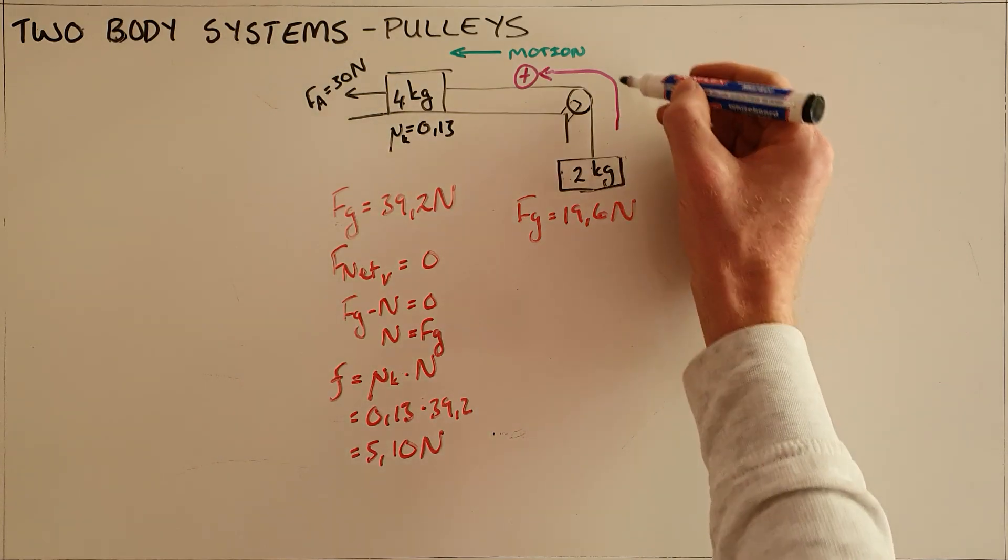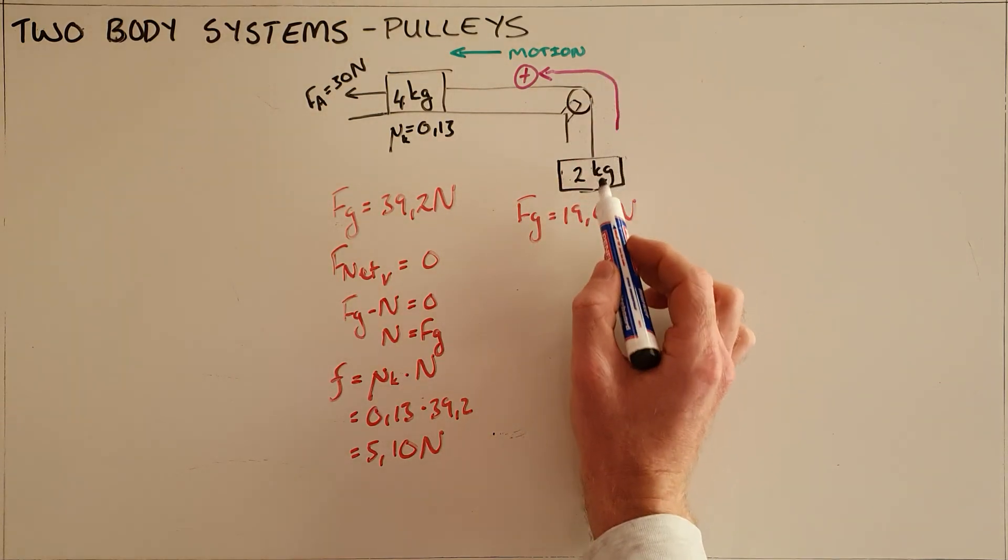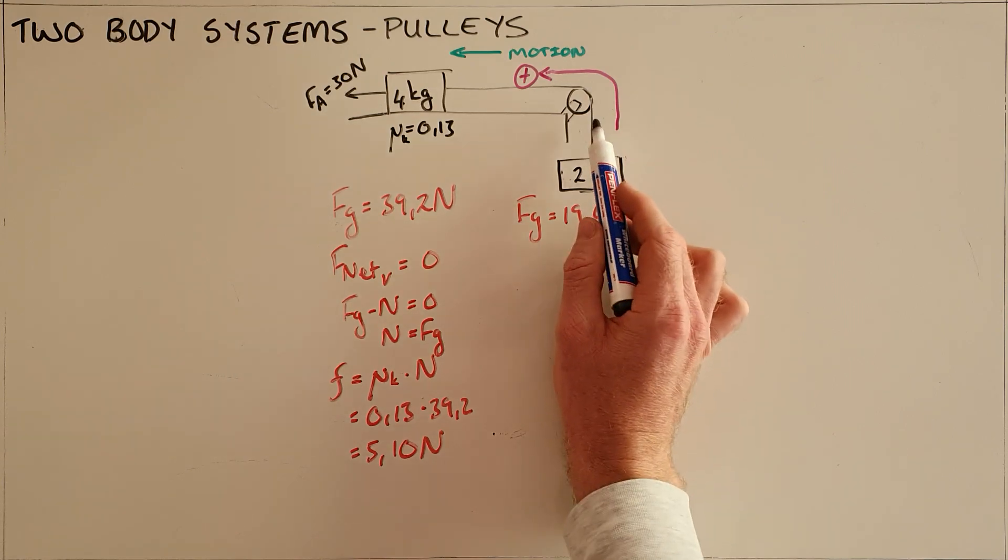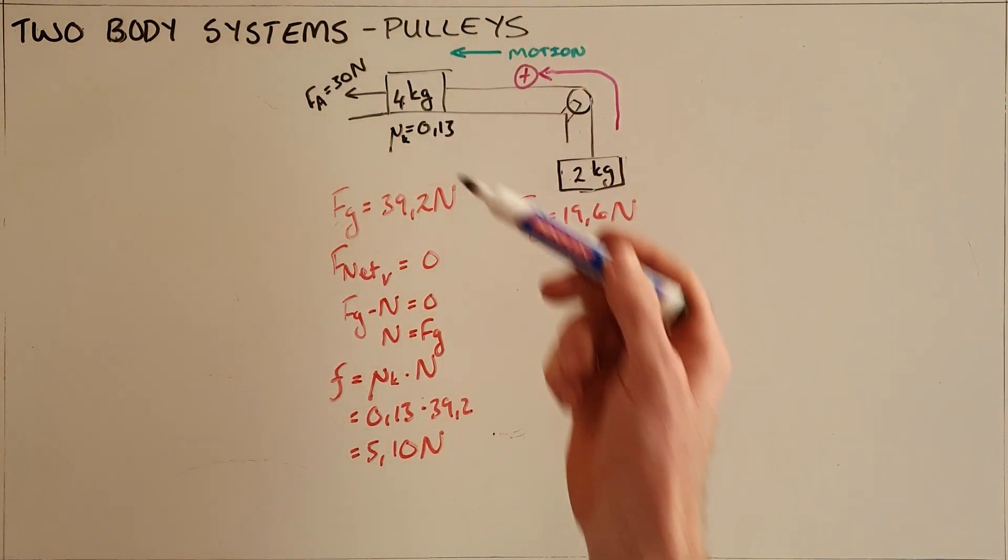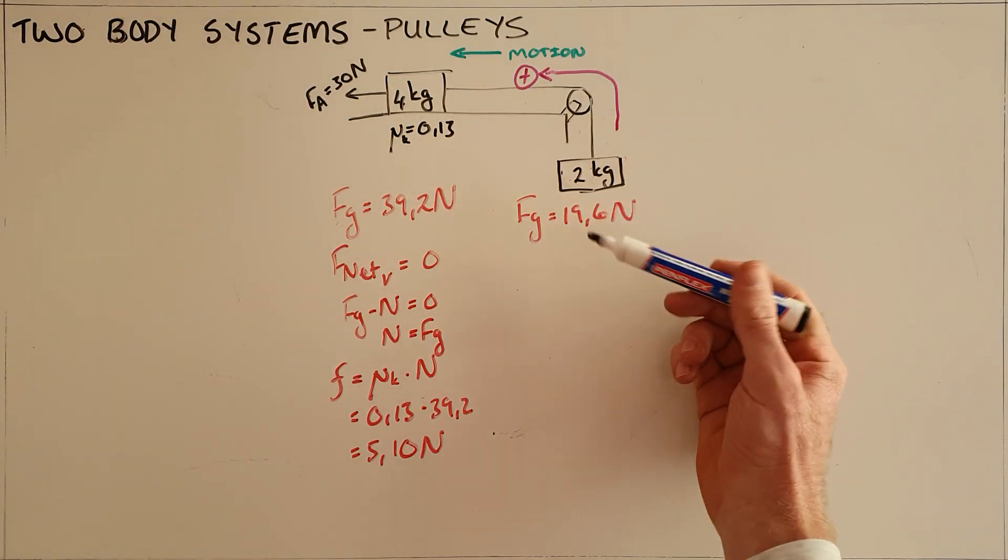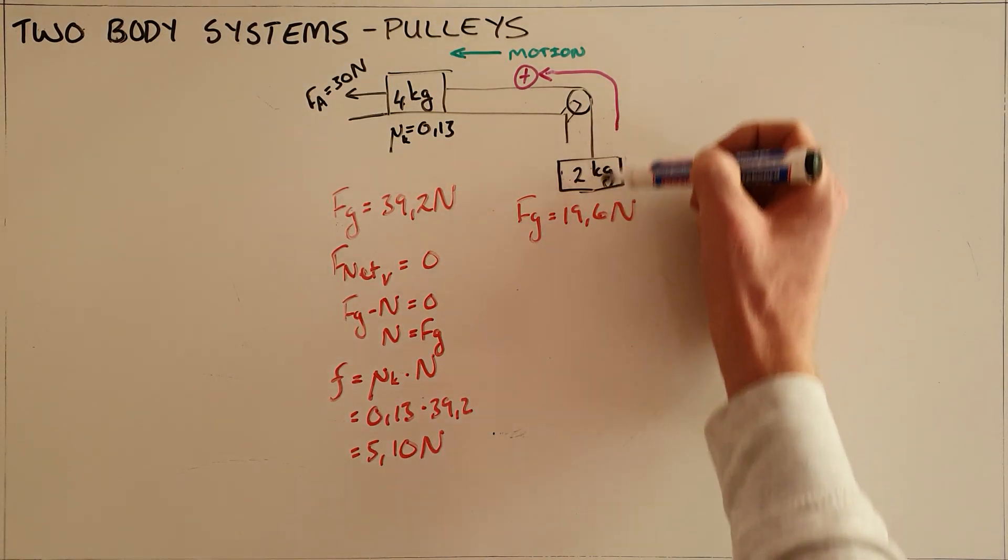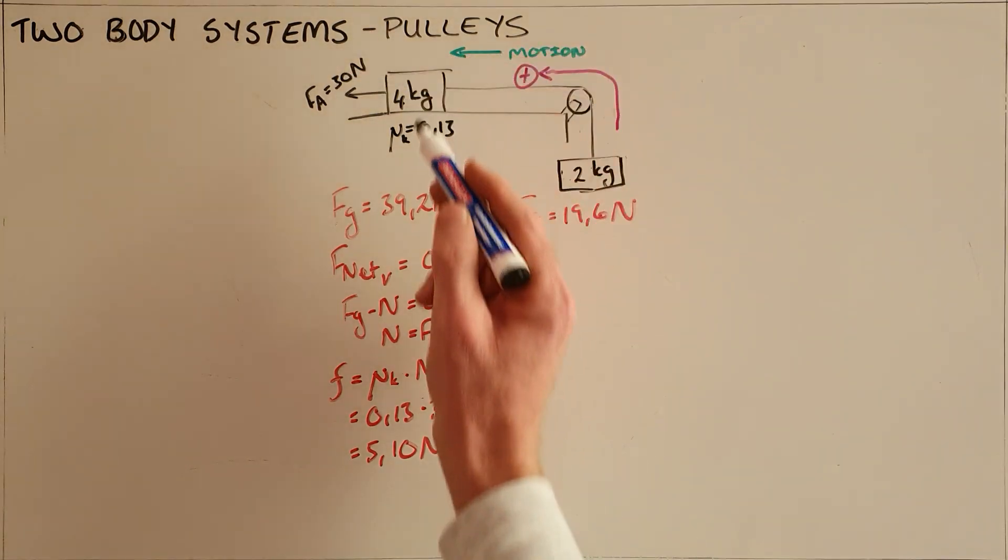The key realization here is that they move simultaneously. When this object moves upwards, it corresponds to this object moving to the left. When we define our reference direction, the reference direction is upward for this object and to the left for this object.